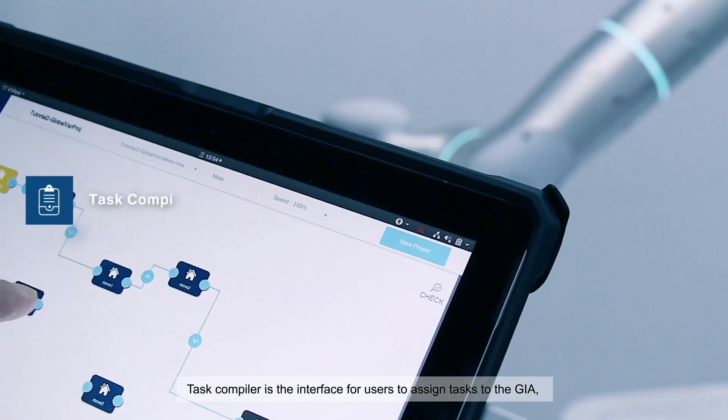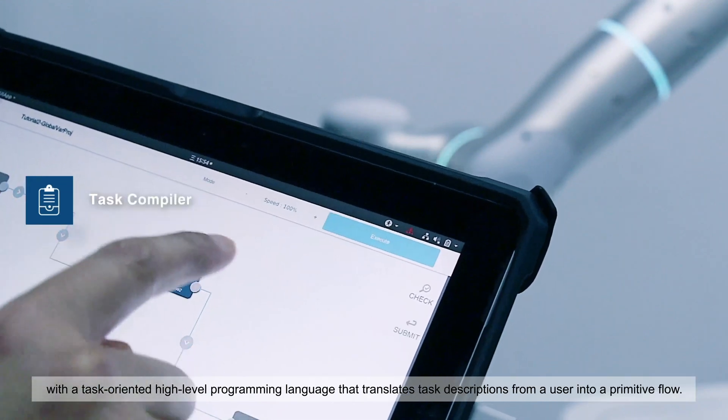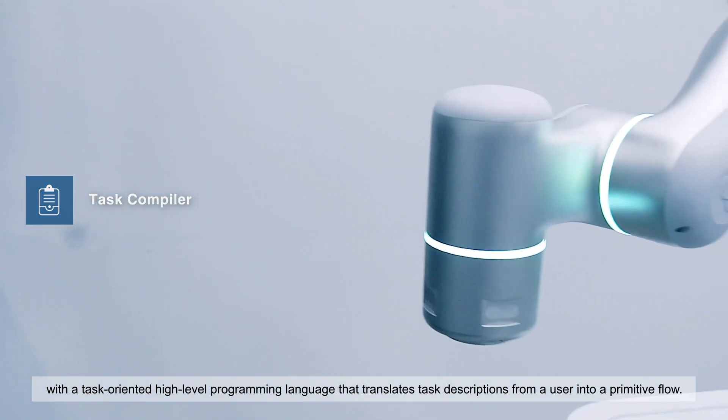Task compiler is the interface for users to assign tasks to the GIA, with a task-oriented high-level programming language that translates task descriptions from a user into a primitive flow.